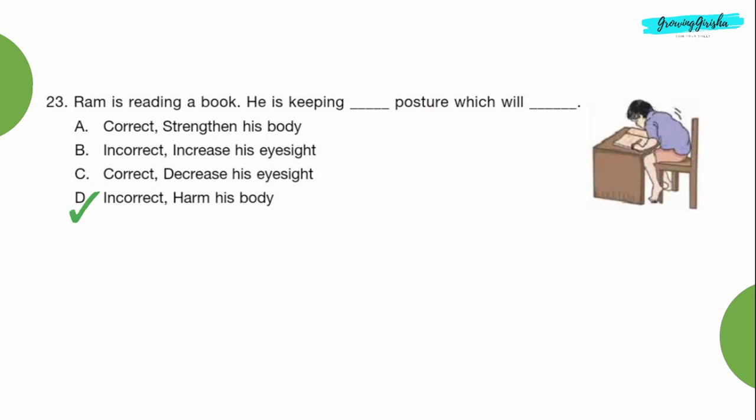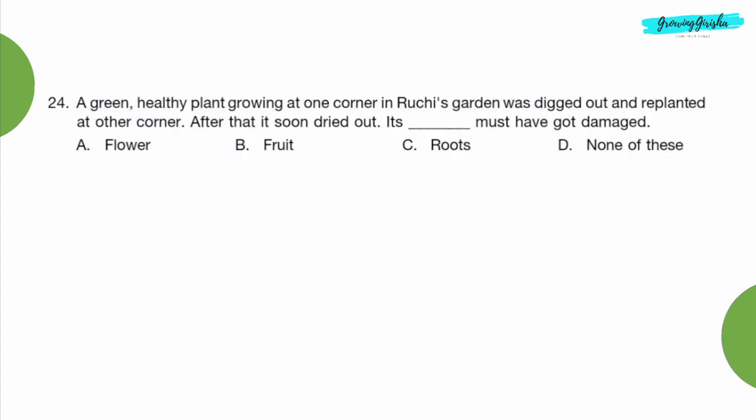Question 24: A green healthy plant growing at one corner in Ruchi's garden was dug out and replanted at other corner. After that it soon dried out. Its dash must have got damaged. Option C, Roots.